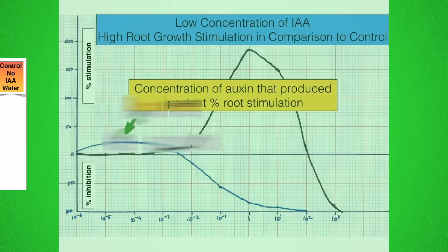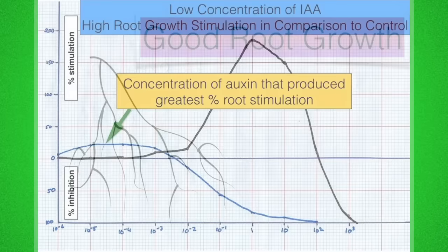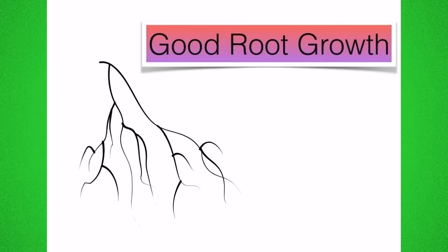When you plot your results you hopefully get a graph similar to this. You can see that at very low IAA concentrations there was a great deal of root growth stimulation in comparison to the control. So IAA seems to have an effect on roots. At very low concentrations it makes them grow more than the control.